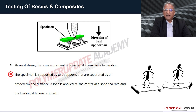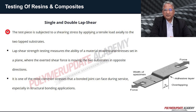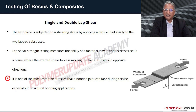The next important test for composite testing is single and double lap shear. The test piece is subjected to shearing stress by applying a tensile load axially to two lap substrates. Lap shear testing measures the ability of a material to withstand stresses set in a plane where the exerted shear force moves the two substrates in opposite directions. It is one of the most common stresses that a bonded joint can face during service, especially in structural bonding applications.